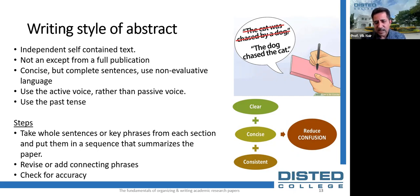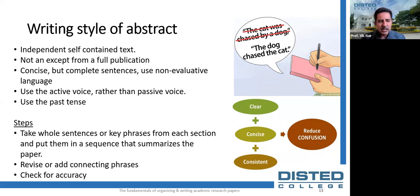Always use the past tense because you are reporting on research that has been completed. To begin composing your abstract, take whole sentences or key phrases from each section and put them in sequence to summarize the paper. Then revise the writing to introduce each section with good connecting phrases or words to make it cohesive and clear. Before handing in your final paper, check that the information in the abstract accurately reflects the actual paper.